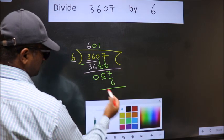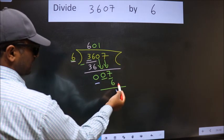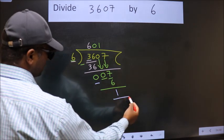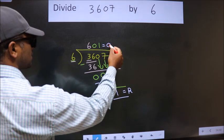Now we subtract. We get 1. No more numbers to bring it down. So we stop here. This is our remainder. This is our quotient.